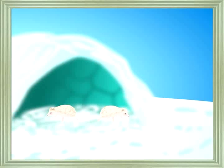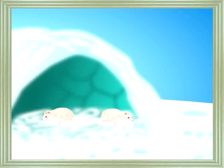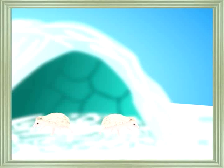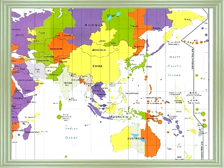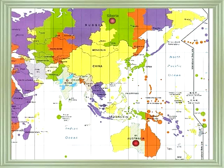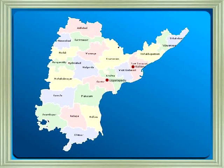Some animals like the hedgehog undergo hibernation. A large number of birds of different species migrate from Siberia and Australia during extreme winter to areas in India where temperatures are not very cold. Koleru and Upalapadu are two important places in Andhra Pradesh where such birds arrive.